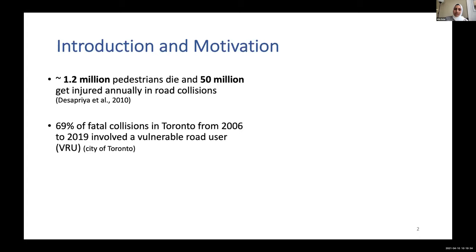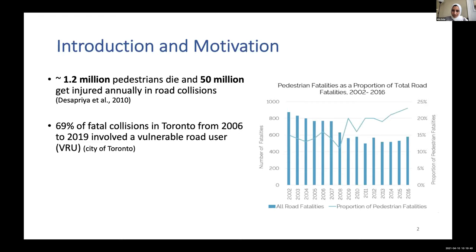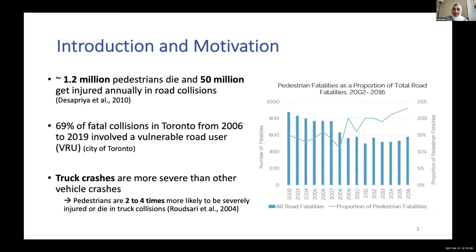According to statistics from the Ministry of Transportation in Ontario, although road fatalities tend to decrease over time, the proportion of pedestrian fatalities keeps increasing — a very alarming fact. In terms of truck crashes specifically, these are much more severe than other vehicle crashes, especially when pedestrians are involved. Pedestrians are two to four times more likely to be severely injured or die in truck collisions.